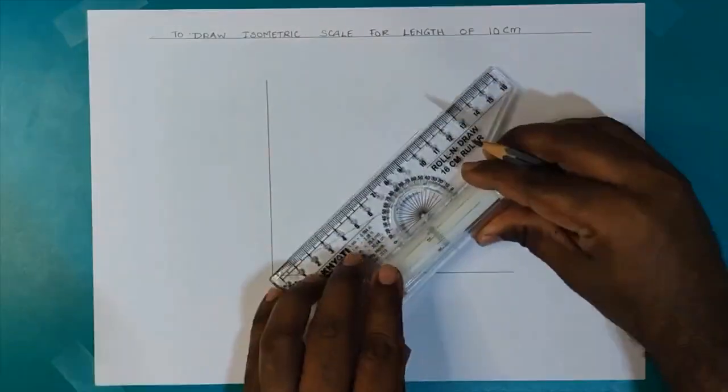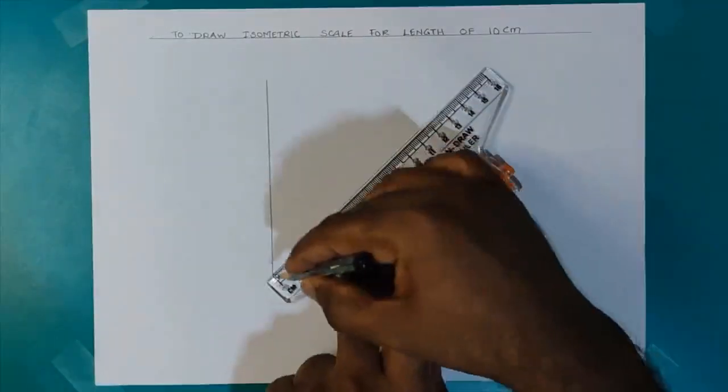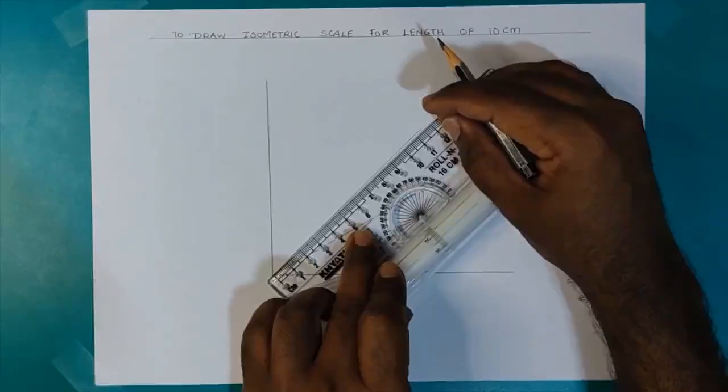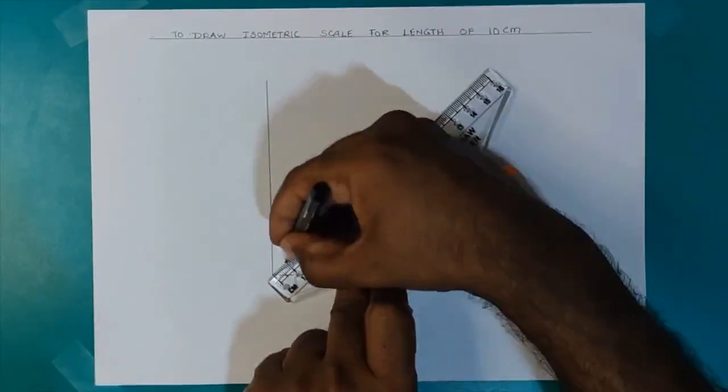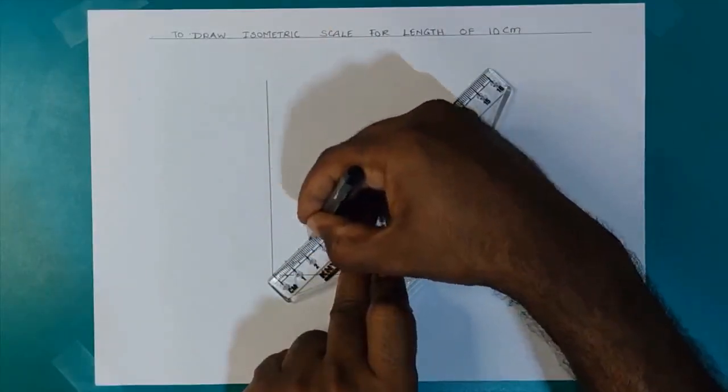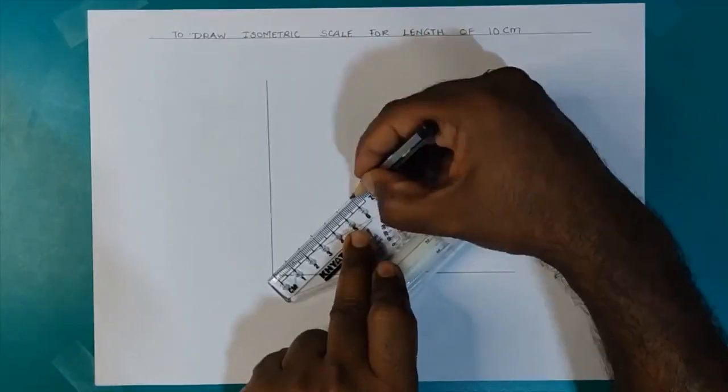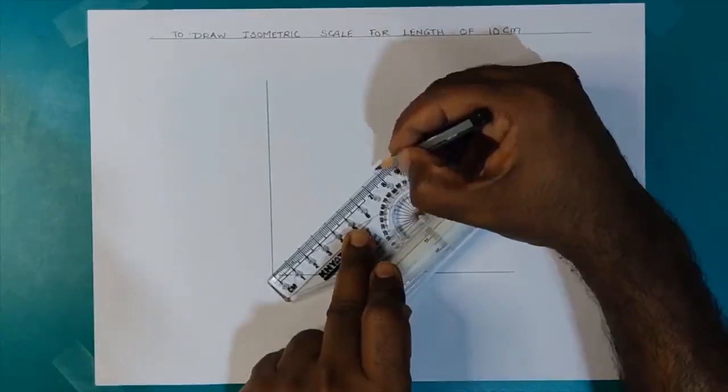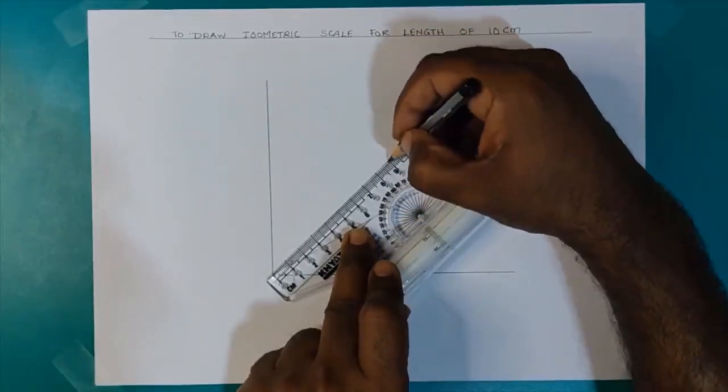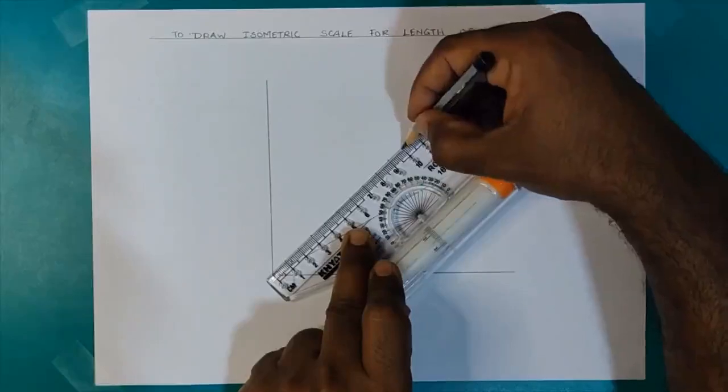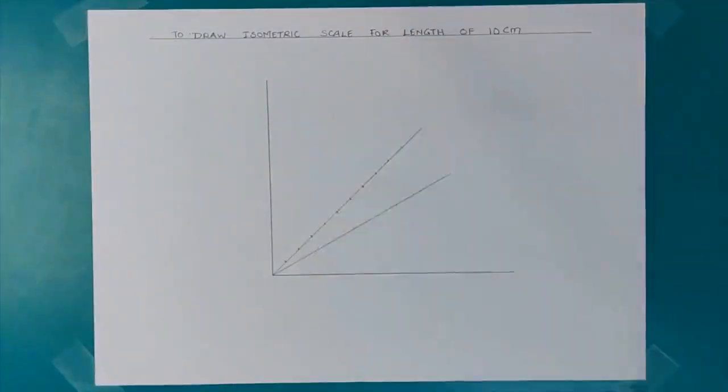On the line inclined at 45 degrees, I take divisions at 1 cm intervals. So I am drawing a scale for 10 cm. So I will be taking 10 divisions, each division 1 cm apart, on the line inclined at 45 degrees.